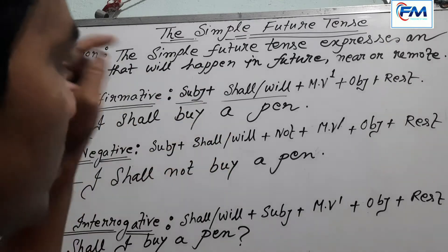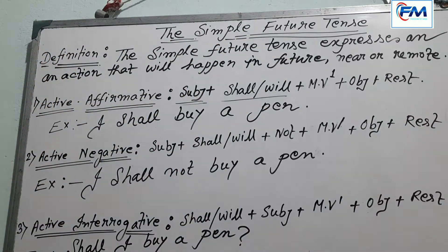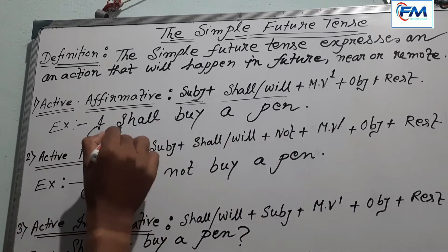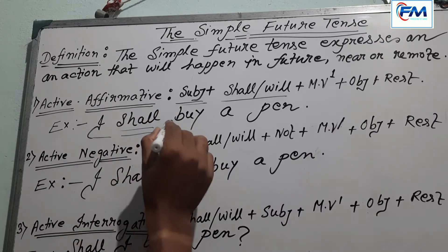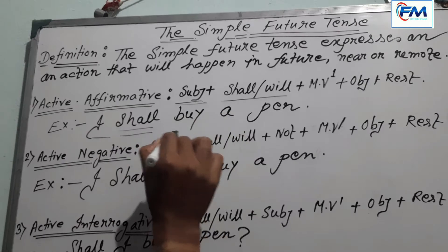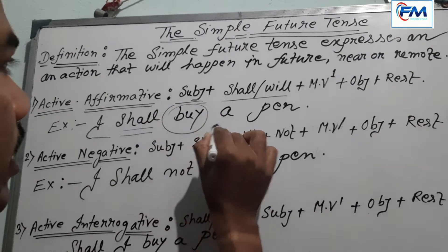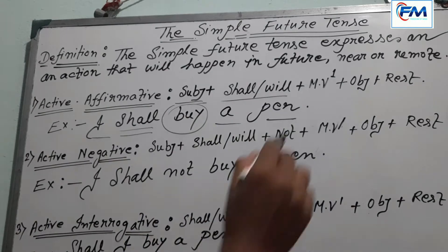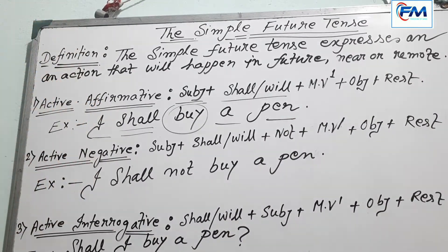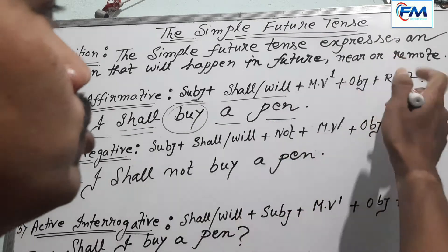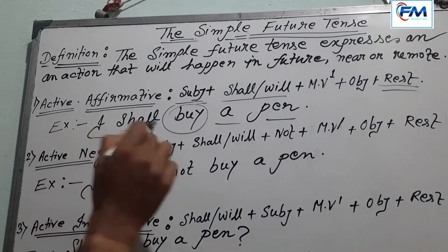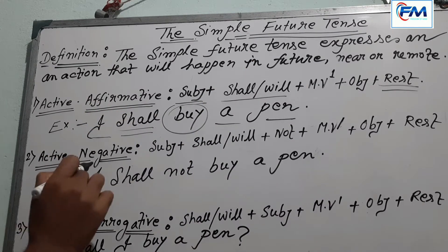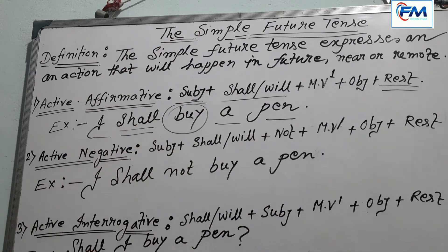The example for the active affirmative is: 'I shall buy a pen.' Here, 'I' is the subject, 'shall' is the auxiliary verb, 'buy' is the main verb in present form, and 'a pen' is the object. There are no additional words belonging to the part of rest. So this sentence is in affirmative form.